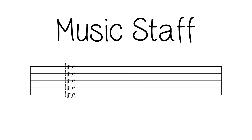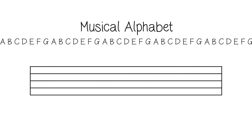On a music staff, the lines and spaces represent certain letters of the musical alphabet. By placing a clef, like the treble clef or bass clef, it lets us know which letters to use. In this video, we will focus on the bass clef.